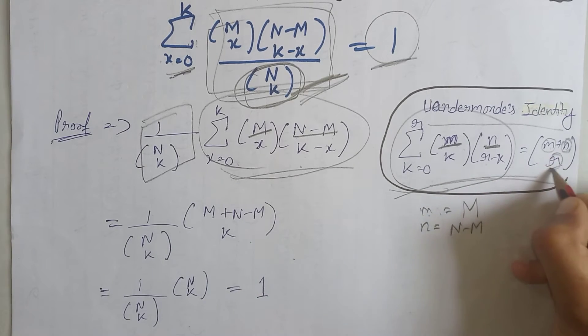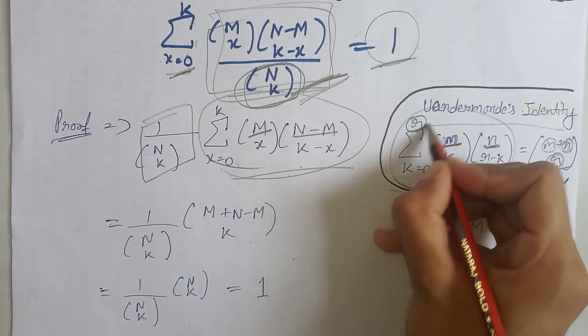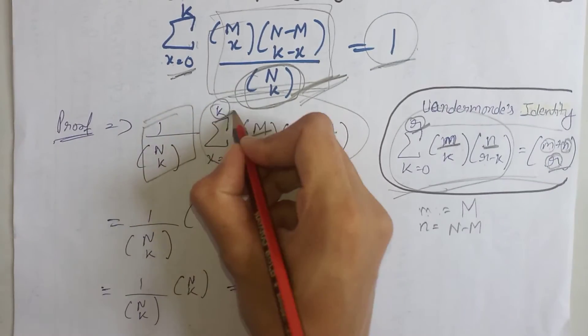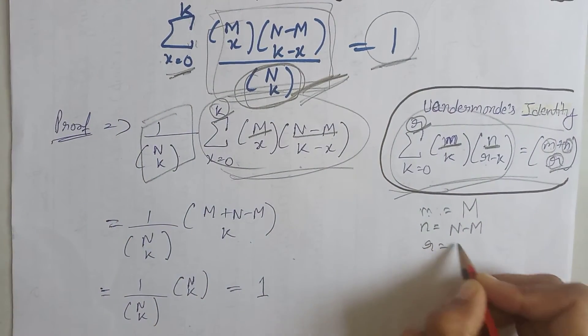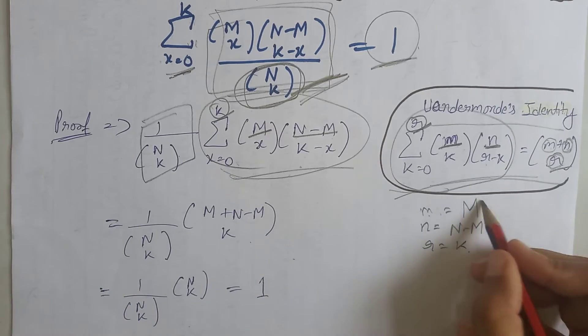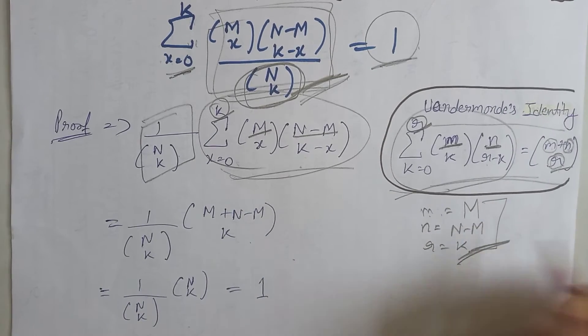Now we have to find the value of small r. You can see that here at the place of this small r we have k, that means the value of r is equal to k.